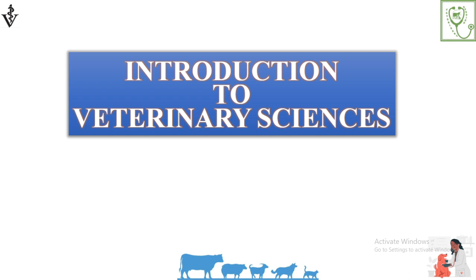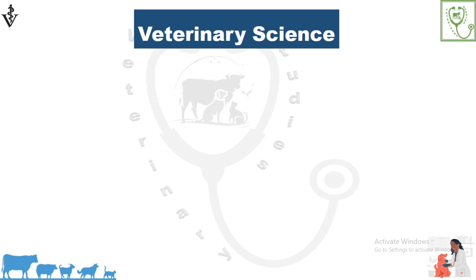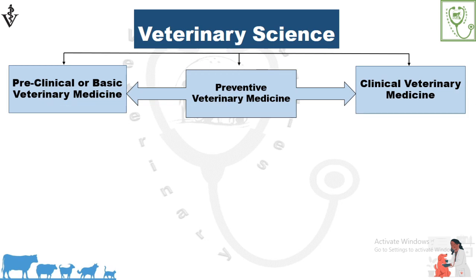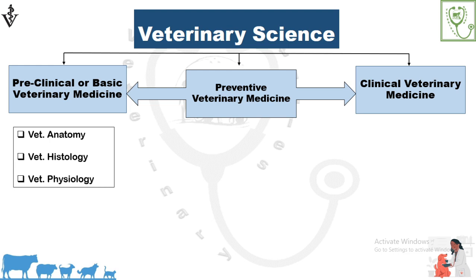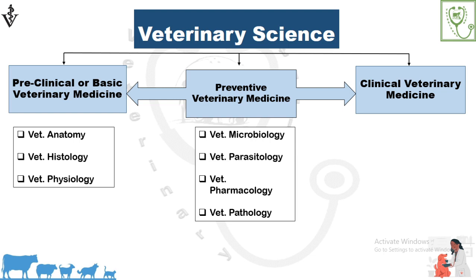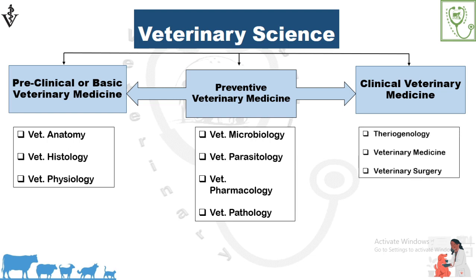As we have discussed in our last lecture, veterinary sciences is subdivided into three branches. Number one: preclinical or basic veterinary medicine, which includes veterinary anatomy, veterinary histology, and veterinary physiology. The second one is preventive veterinary medicine, which includes veterinary microbiology, veterinary parasitology, veterinary pharmacology, and veterinary pathology. The third one is clinical veterinary medicine, which includes periogenology, veterinary medicine, and veterinary surgery. Preventive veterinary medicine acts as a bridge between preclinical veterinary medicine and clinical veterinary medicine.